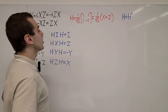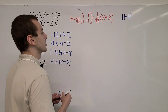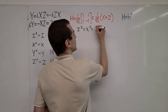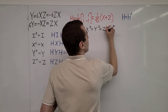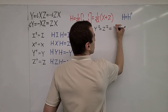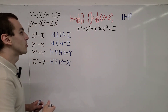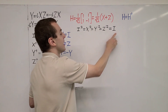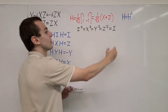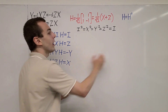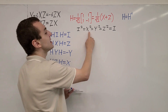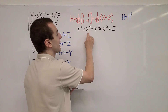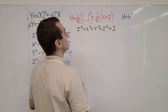One more property I want to write down is what happens when we square these operators. If we take the identity squared, that's the same as X squared, Y squared, and Z squared — and this is all equal to the identity. So all of these operators are Hermitian and their squares equal the identity. If you square the matrices corresponding to Pauli X, Pauli Y, and Pauli Z, you will get the identity.